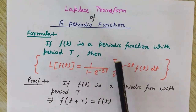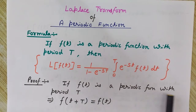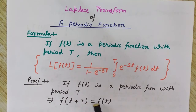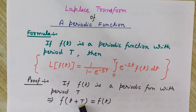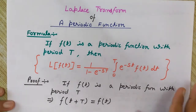Here, capital T is the time period of the periodic function. By the basic definition of any periodic function, if f(t) is periodic with period T, then f(t plus T) equals f(t). The value of a periodic function does not change when we add any multiple of the time period, so f(t+T), f(t+2T), f(t+3T) are all equal to f(t), because the periodic function repeats itself after every time period.